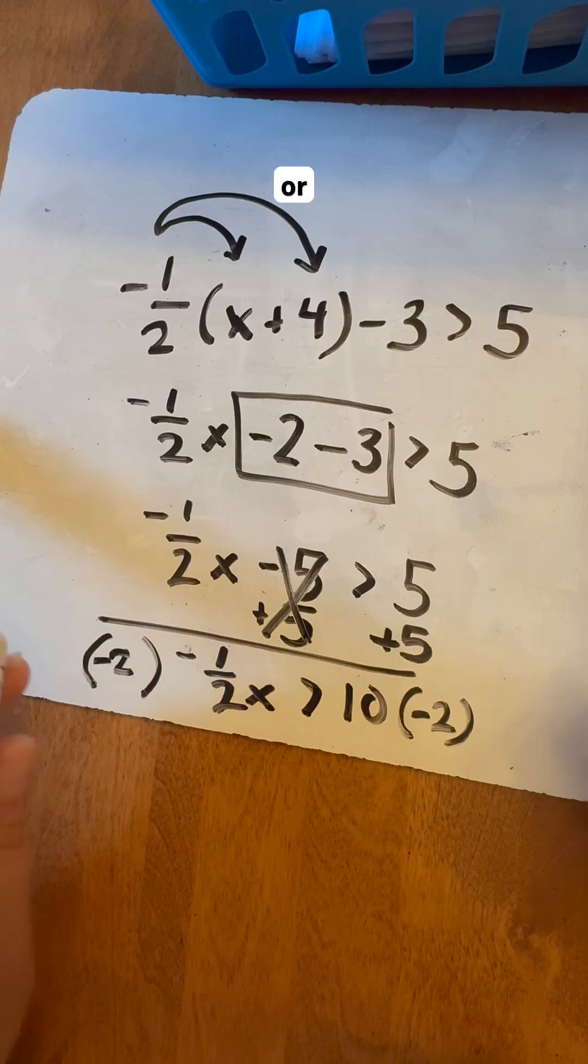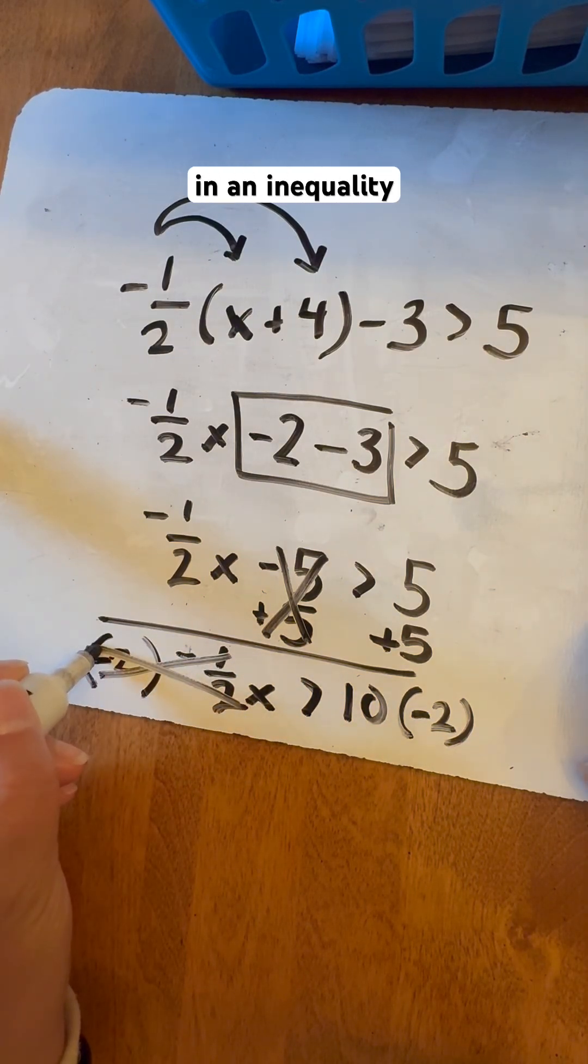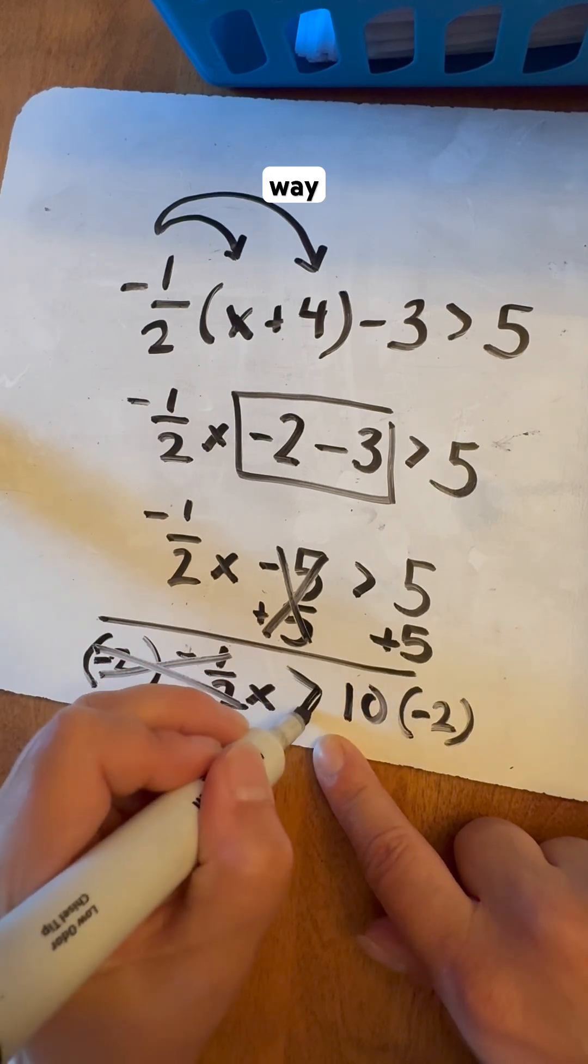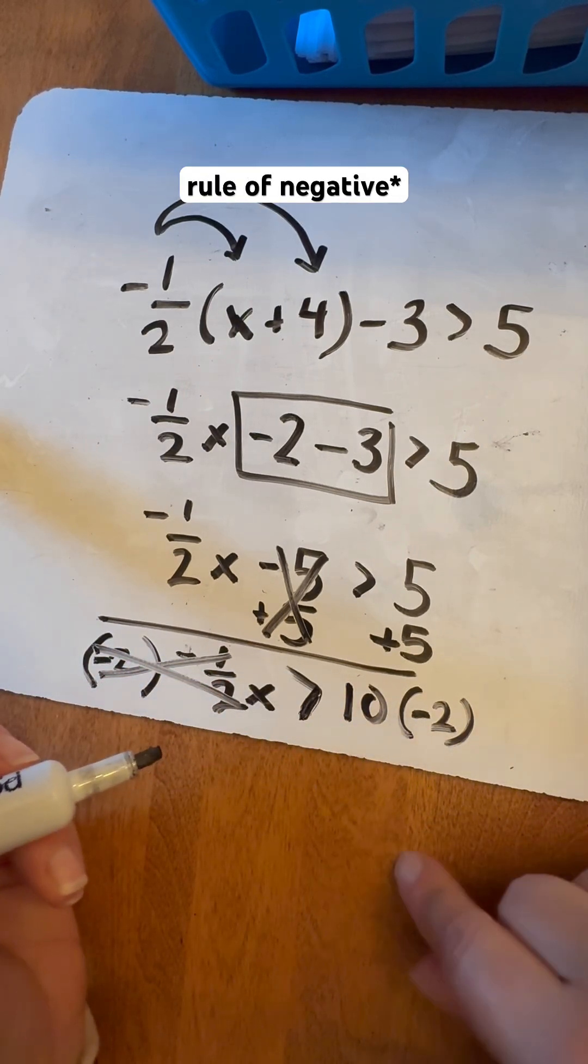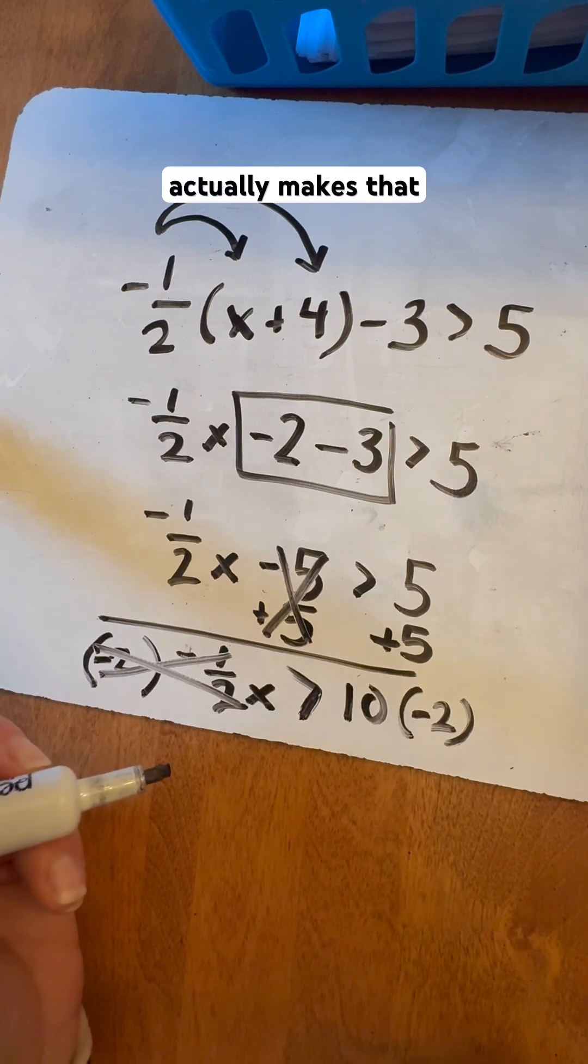And when you multiply or divide by a negative number in an inequality statement, the inequality statement is going to flip the other way. And that is because of the rule of negative times the negative is positive. So it actually makes that flip.